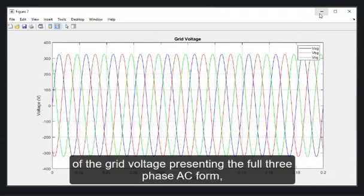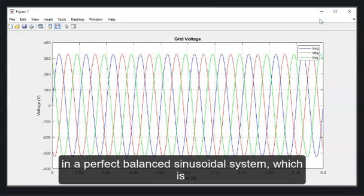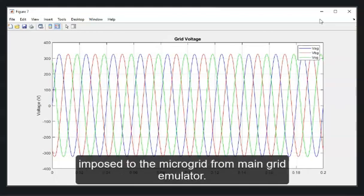The plot of the grid voltage, presenting the full three-phase AC form in a perfect balanced sinusoidal system, which is imposed to the microgrid output voltage from the main grid emulator.